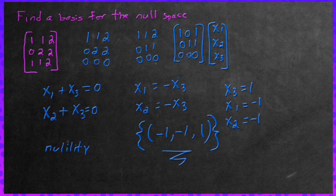Yeah, nullity. It's one because it's equivalent to the dimension of the basis for the null space, which we just found right here. There's only one vector inside, therefore it's one. If there were two vectors, the dimension would be two, and the nullity would be two. So anyways, that's how you do that. Thank you for watching.